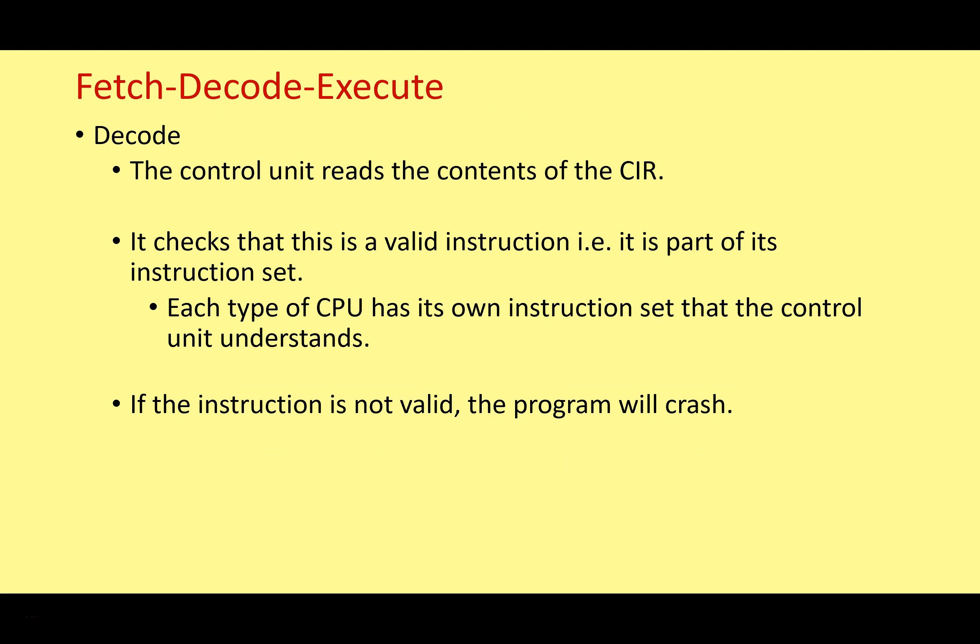Overview of the decode stage. The control unit reads the contents of the current instruction register and checks that this is a valid instruction — i.e., it is part of the instruction set. Remember that each CPU has its own instruction set, which is a list of all the instructions that it can understand. If the instruction is not valid, then the program will crash. Hopefully it is a valid instruction and it will continue to the execute stage.